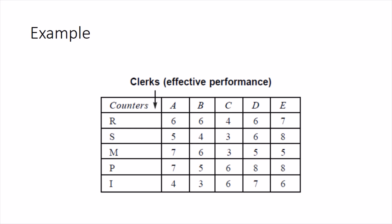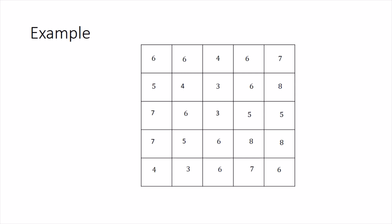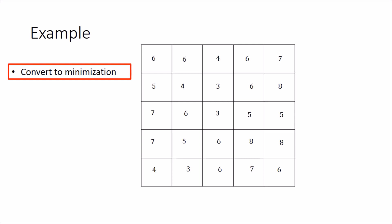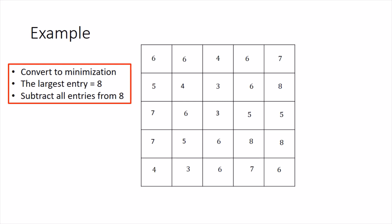Let me represent this data in matrix form: five rows and five columns. This is a maximization problem and we need to convert it into a minimization problem. To do that, we follow the same technique used in the transportation problem: select the largest entry from the complete matrix, which is 8 here, and then subtract all numbers of the matrix from this largest entry. Wherever 8 is present, we get zero; the rest of the values are automatically updated. The resulting matrix is the equivalent minimization type problem of the original.